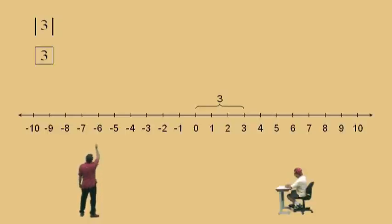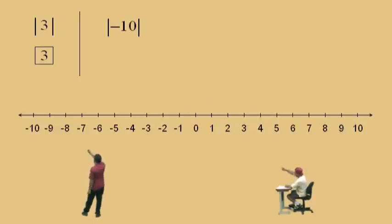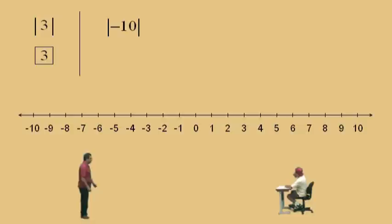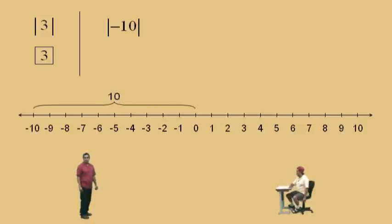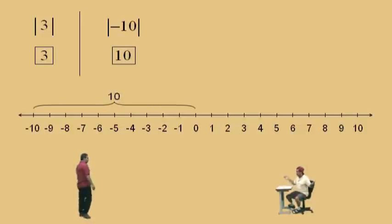How about the absolute value of negative 10, Charlie? Negative 10 is over here, and 0 is over there. How far apart are they? 10. So the absolute value of negative 10 is 10.